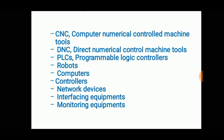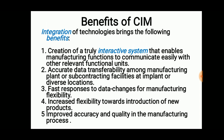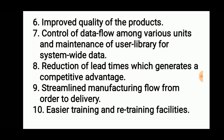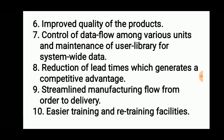CIM hardware includes computers, controllers, network devices, interfacing equipment, DNC, CNCs, and PLCs. Benefits of CIM include creation of a truly interactive system enabling manufacturing functions to communicate easily with other functional units, accurate data transferability among manufacturing plants or subcontracting facilities at in-plant or diverse locations, fast responses, increased flexibility for introducing new products, and improved accuracy, quality, and control of data flow among various units.